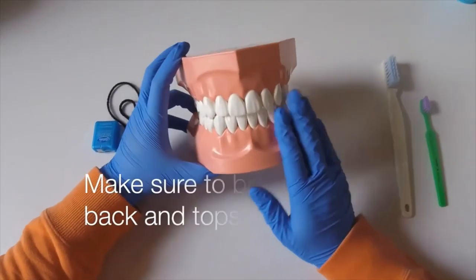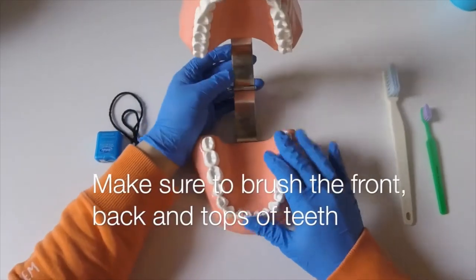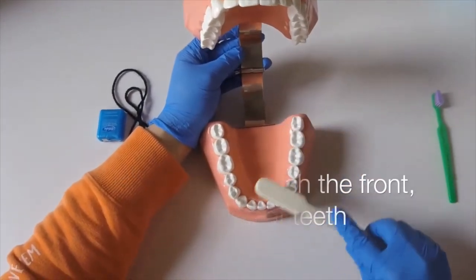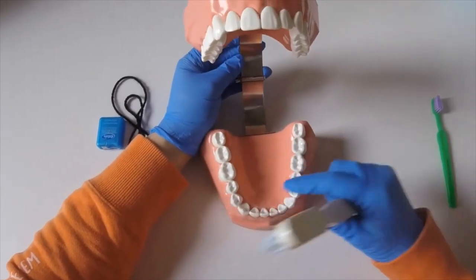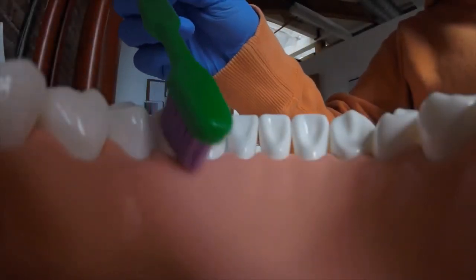And we want to brush all three sides of the teeth. We want to brush the front, the tops, and we want to brush the back of the teeth. And to brush the back, we take our toothbrush, and we go up and down like this.